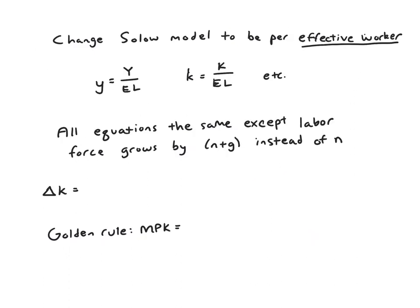So the key technique is going to be that we're going to change everything about the model to be per effective worker. Before, everything was per worker. So we had little y equals Y over L. And now we're going to have little y equals Y over EL. And little k equals K over EL. So k used to represent how much capital me as a worker personally had to work with. Now it's going to represent how much capital do I have per efficiency unit. If my efficiency is 2, then my capital per efficiency unit would be half as much as the capital per worker for me alone.